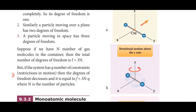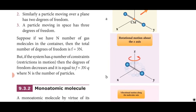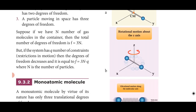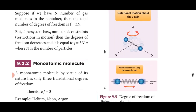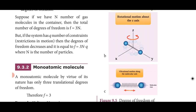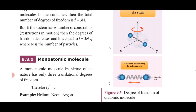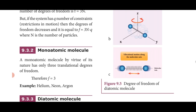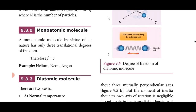If N number of gas molecules are in a container and they are moving, the total number of degrees of freedom is 3N — three degrees of freedom for each molecule. If the system has q number of constraints, the degrees of freedom decreases: f = 3N − q, where N is the number of particles.